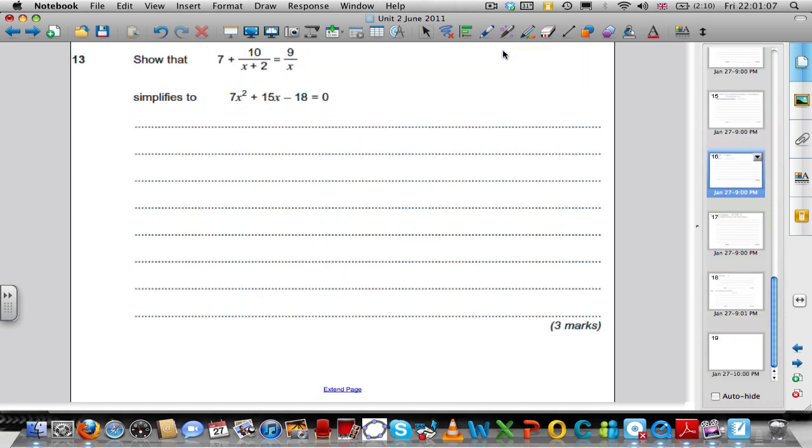Next question, we've got algebraic fractions here, and they're asking us to show that solving this equation simplifies to solving that equation. Let's write out what we've got. 7 plus 10 over X plus 2 is equal to 9 over X.